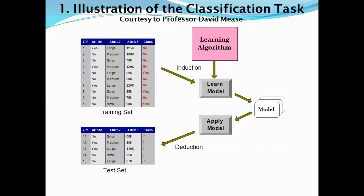This learned model normally contains a set of rules. We apply this model to a test set to test accuracy, then apply it to a new dataset or a real-time dataset.